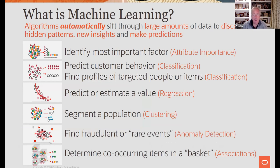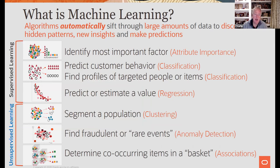You're automatically sifting through large amounts of data to discover hidden patterns, new insights, and ultimately make predictions. The top categories — classification, regression, prediction — are what we call supervised learning. In those cases, we're dealing with labeled historical data where we know the answers: who defaulted on a loan, who bought solar panels, who voluntarily left the company — zero or one.